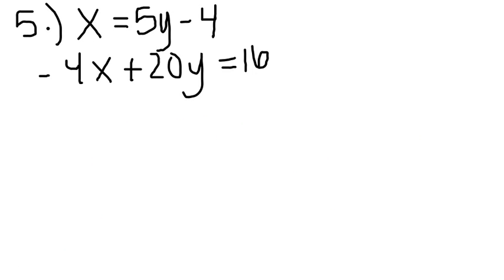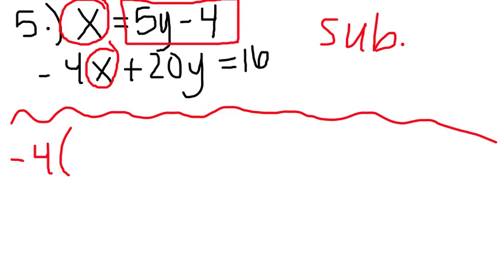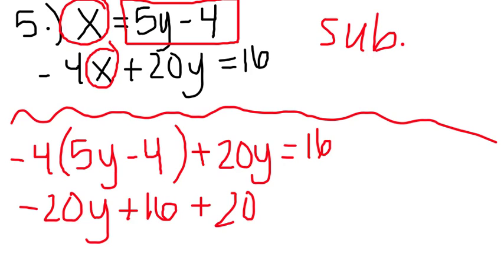In number 5, the easiest method here is substitution, since you already have x alone. x equals 5y minus 4. So I can substitute this x with 5y minus 4. You could also rewrite the equation and use elimination as well. But let's go ahead with substitution, since most of you need more practice with that. So I'm going to rewrite that second equation using substitution. I'm going to take negative 4 and multiply by what I'm substituting for x, which is 5y minus 4. Continue to write the equation as is, and now solve. So when we distribute, we get negative 20y plus 16 plus 20y equals 16. Now what happens here, you can combine like terms, but notice that the negative 20y and the positive 20y cross out. And you just end up with 16 equals 16.